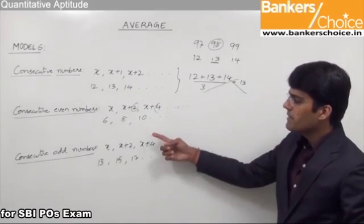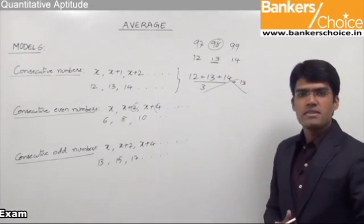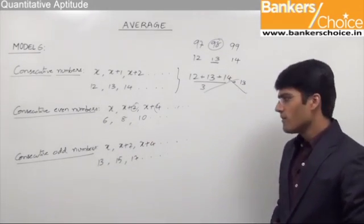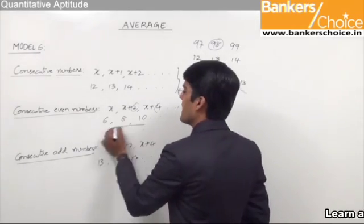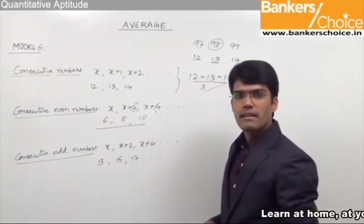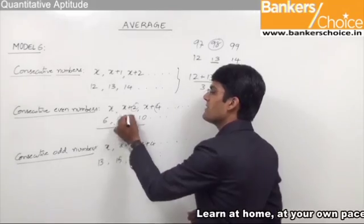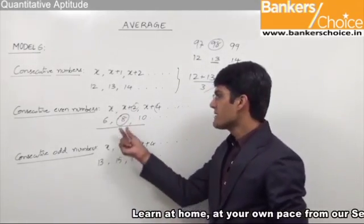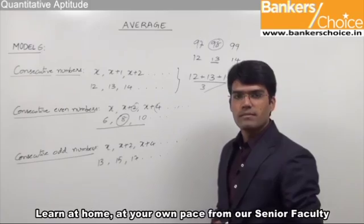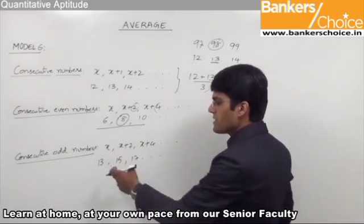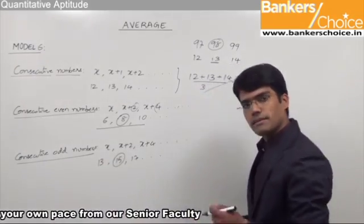Similarly suppose we have consecutive numbers like 97, 98 and 99. The average of these three numbers should always be the middle number since they are consecutive in nature. So for consecutive numbers, always the average can be taken as the middle number. Similarly for consecutive even and consecutive odd numbers, the average can be taken as the middle number. For example the average of 6, 8 and 10 is directly 8, and the average of 13, 15 and 17 is 15.